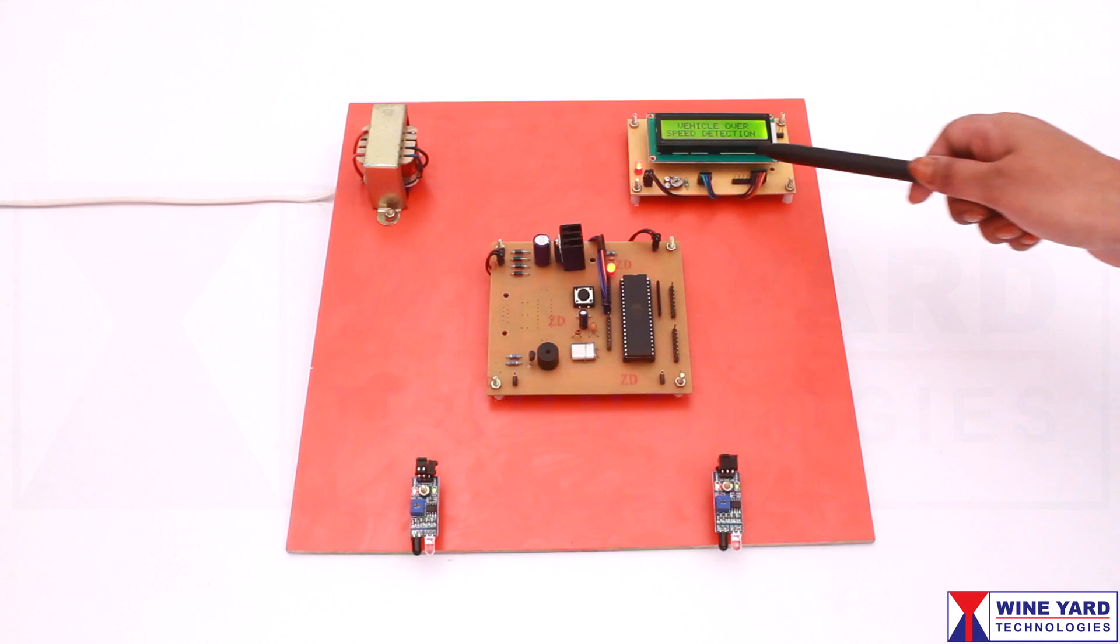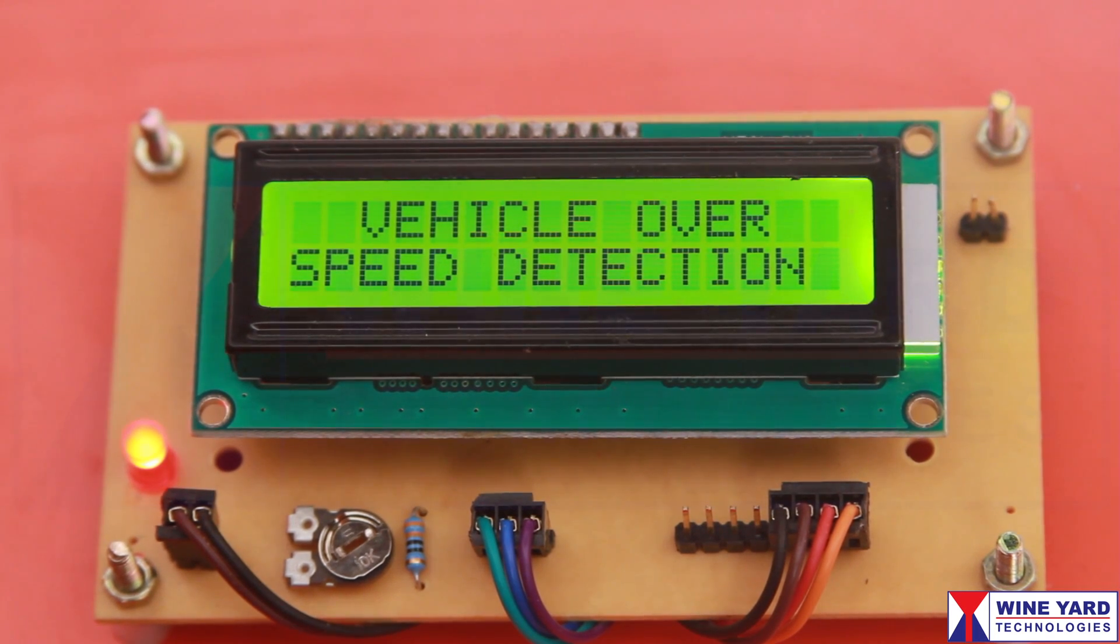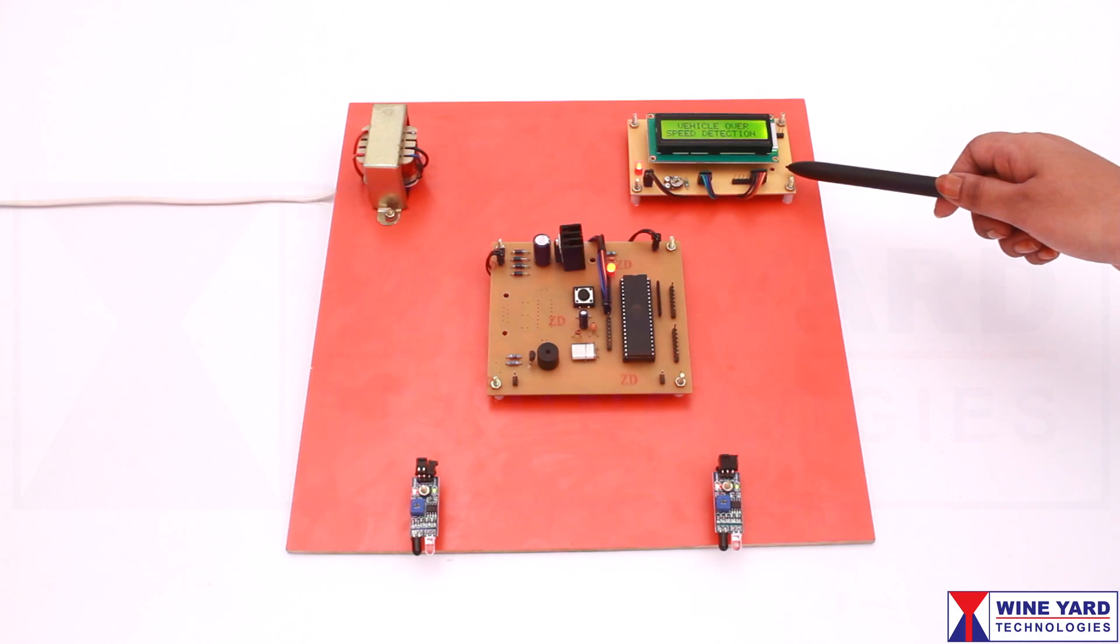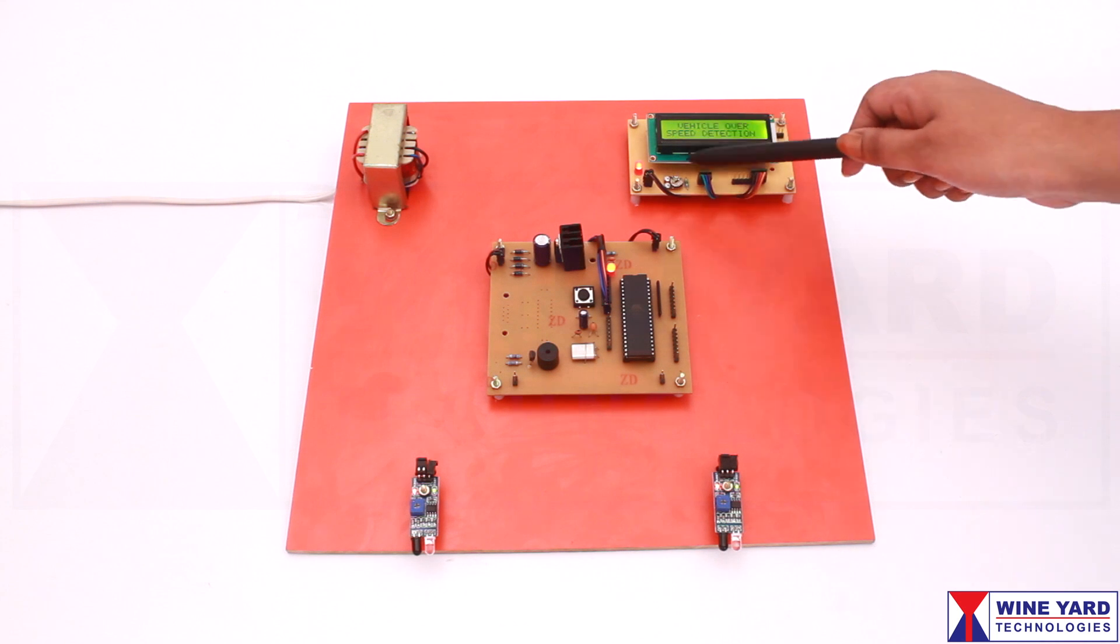A 16x2 LCD is used to display the speed level of the vehicle. You can adjust the display contrast with this preset.